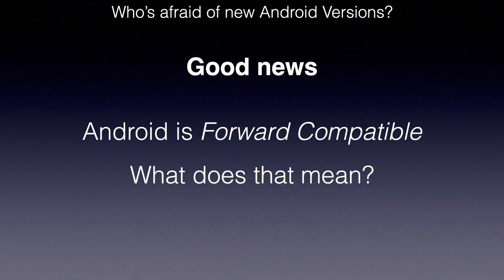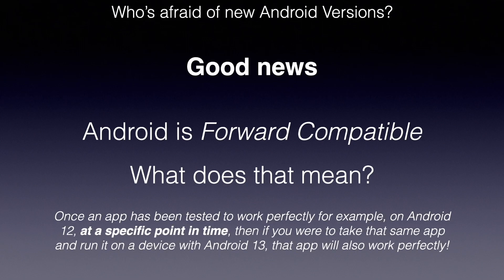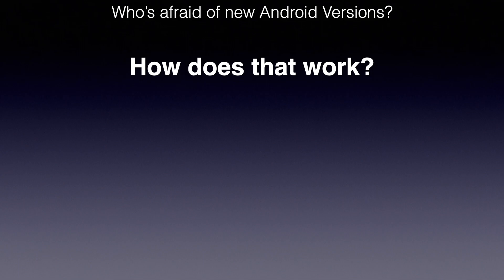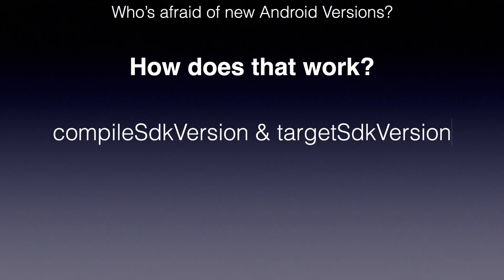Let's see what that actually means. It means that once an app has been tested to work perfectly, for example on Android 12, at a specific point in time, and then you were to take that exact same application and run it on a device with Android 13, that app will also work just fine. So the same applies any time a new version is out — we should not worry about it at that specific point in time. Here's where compile SDK version and target SDK version both come into play.